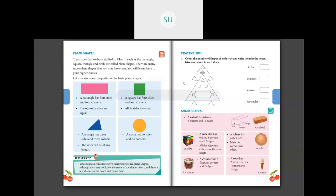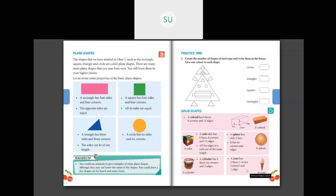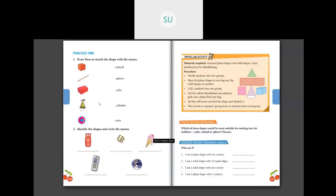From the textbook on solid shapes: a cuboid has 6 faces, 8 corners, and 12 edges. A cube also has 6 faces, 8 corners, and 12 edges, but all edges of a cube are of the same length. A sphere has only 1 face, no corners, and no edges. A cylinder has 3 faces, no corners, and 2 edges. A cone has 2 faces, 1 vertex, and 1 edge.